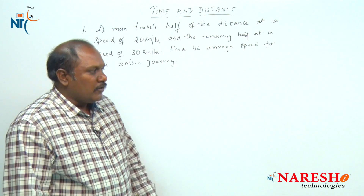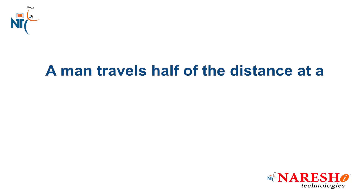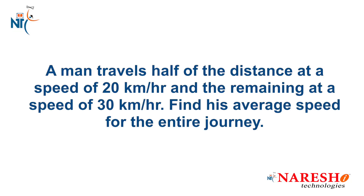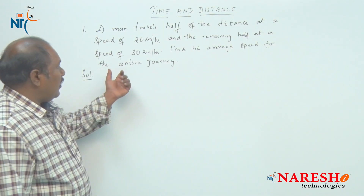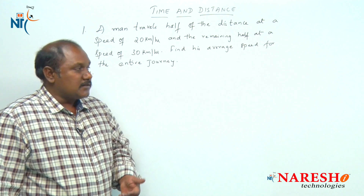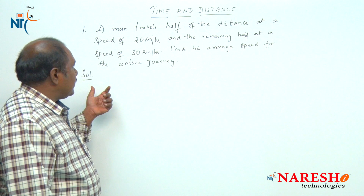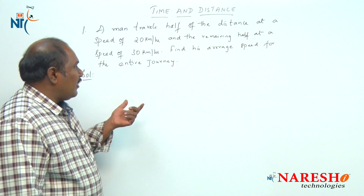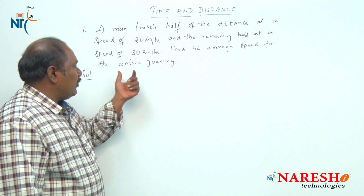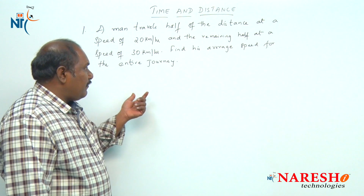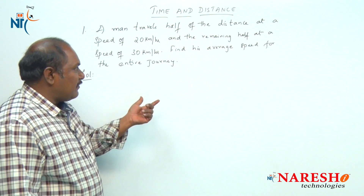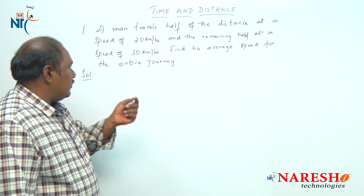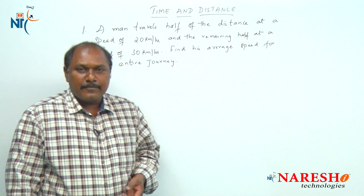Now let us look into a question. A man travels half of the distance at a speed of 20 km per hour and the remaining half at a speed of 30 km per hour. Find his average speed for the entire journey.